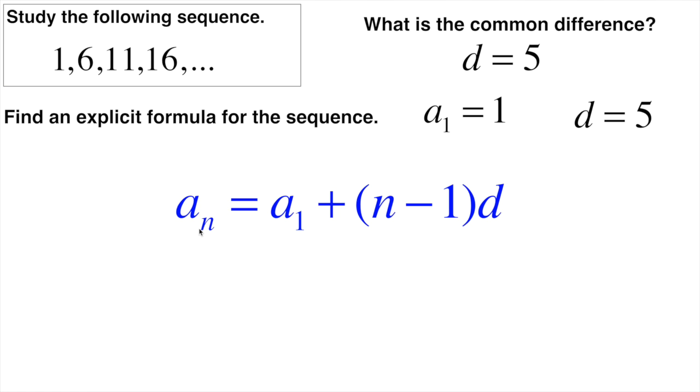And our original one for sequences is here in blue. This is our aₙ equals a₁ plus (n minus 1)d. This is our original one, and we know a₁ just means the first term in the sequence, and the first term here is just 1. We know it's the first because there are no dots here, there's no other commas. This is the first one.